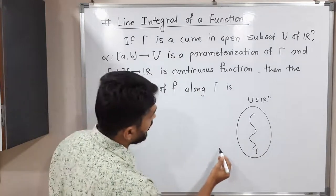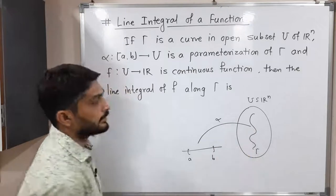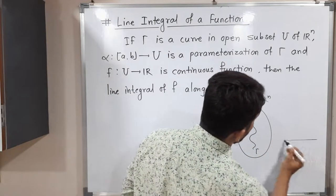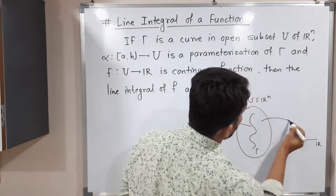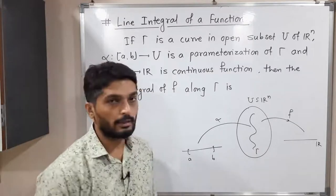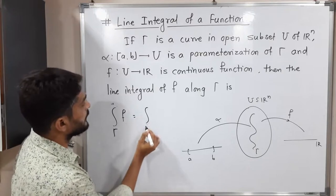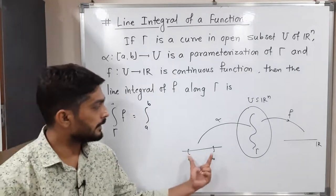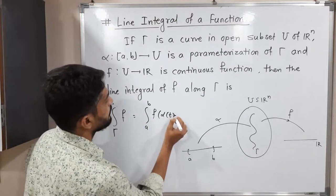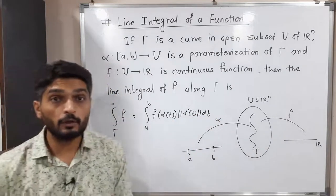We have a parameterization alpha, which is defined on the closed interval [A, B], and its image will be that curve. So alpha is a parameterization of that curve gamma. We also have a continuous function F from U to R. The line integral of F over gamma is given by the formula: integration of F over gamma equals integration from A to B of F(alpha(T)) times the norm of alpha-dash(T) dT.